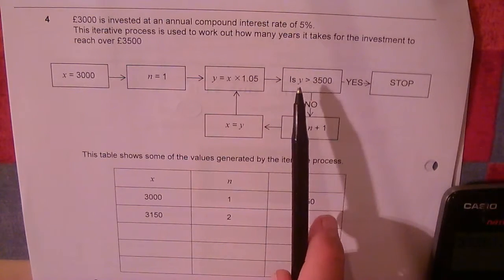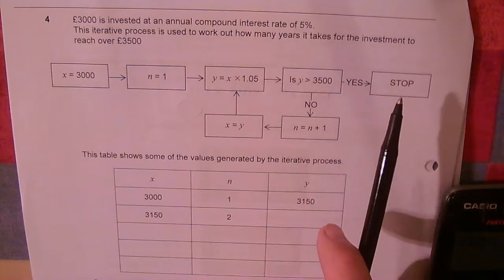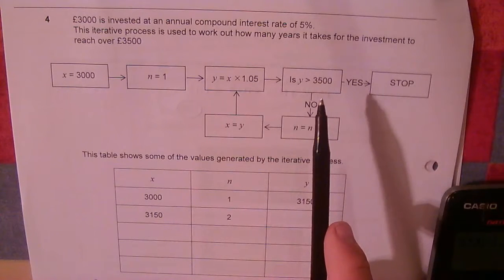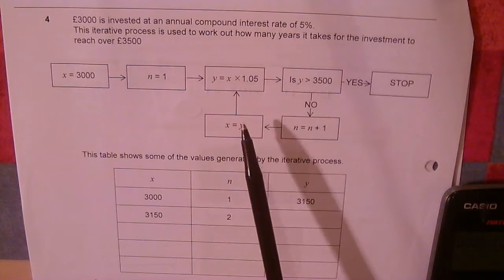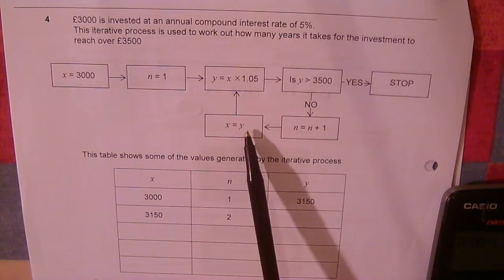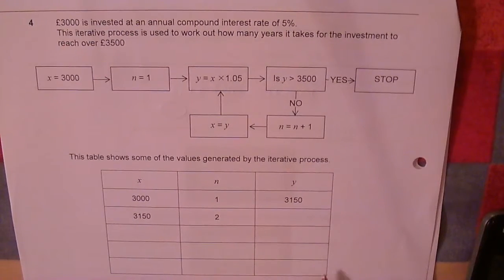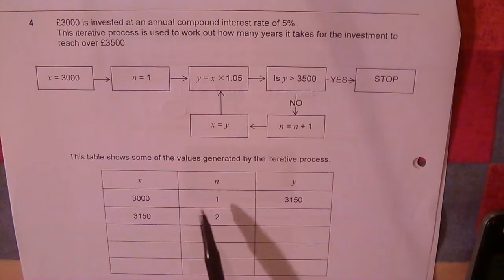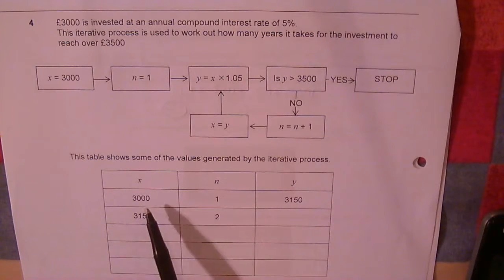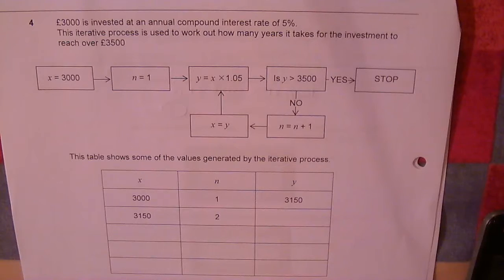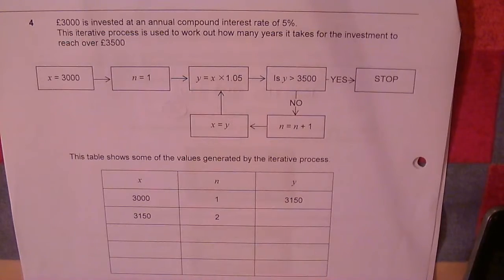This is saying, have I got more than £3,500 yet? If yes, stop the process. If no, I'm on to my next iteration. This bit here means my old output, so the previous output is now becoming the input. They've helpfully shown that here. So all I have to do is repeat the process for the second time.